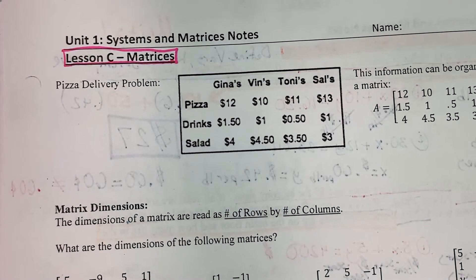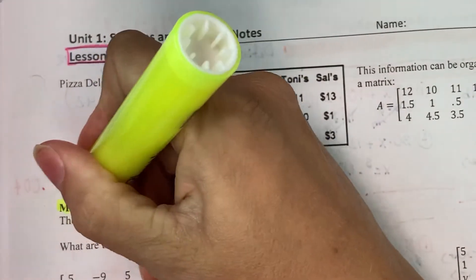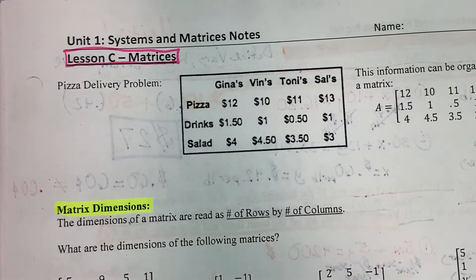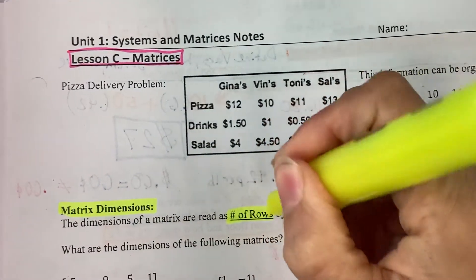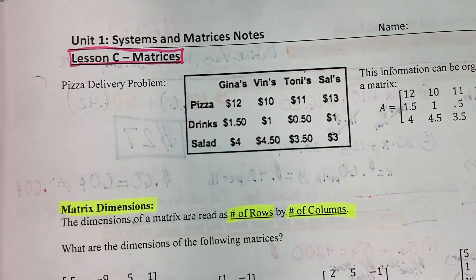So in this first section, we're going to look at matrix dimensions, and the dimensions of a matrix are read as the number of rows by the number of columns.